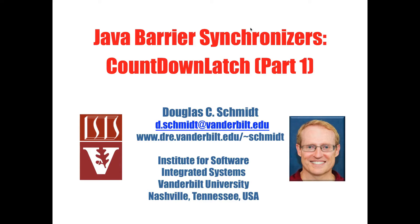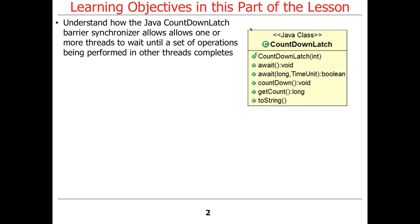Now that you've had a chance to hear about how barrier synchronization works in general, let's take a deeper dive into one example of a barrier synchronizer, which is called the countdown latch. We're going to describe how the Java CountDownLatch barrier synchronizer allows one or more threads to wait until a set of operations being performed in other threads completes.